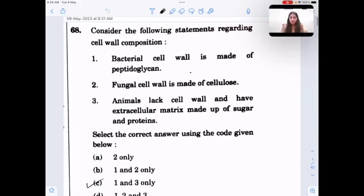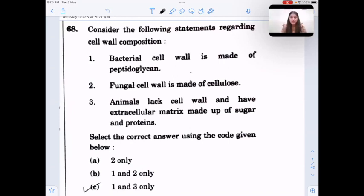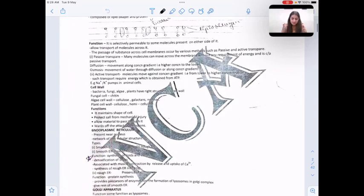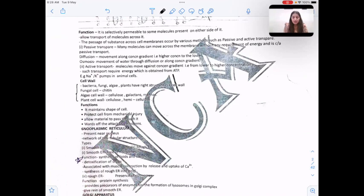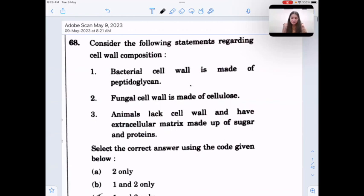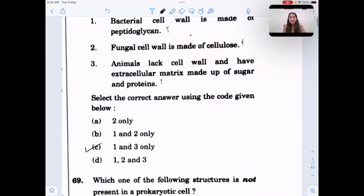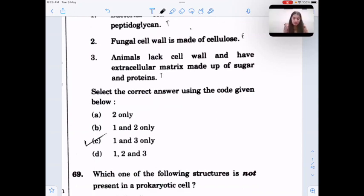Consider the following statements about cell wall composition. Three statements are given for bacteria, fungi, algae and plants. The correct answer: bacterial cell wall is made up of peptidoglycan, this is true. Fungal cell wall is not made up of cellulose, it's made up of chitin, this is false. And this statement is also true that animal cells lack cell wall, so option C is correct.